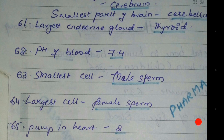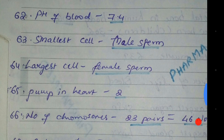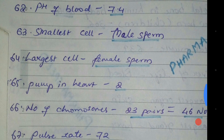Smallest cell in our body is the male sperm. The largest cell in our body is the female egg — the ovum.